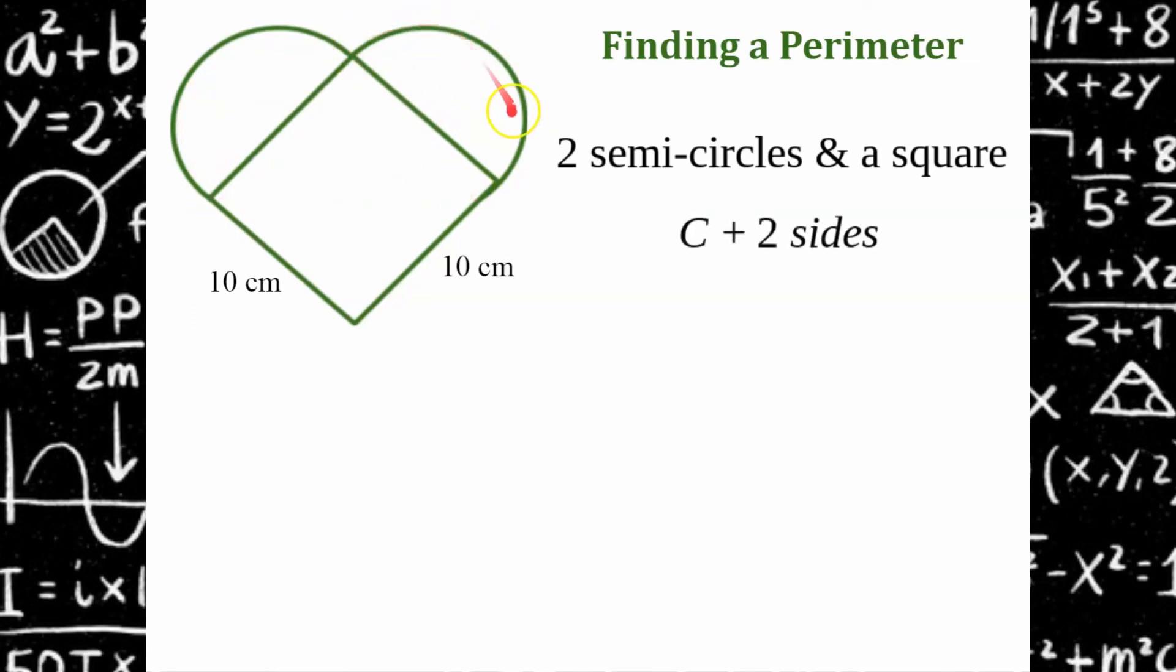We're going to find the circumference of one circle because if I put this half of a circumference with this half, it gives me one full circumference. And then I have these two sides. So circumference, one side, two sides.